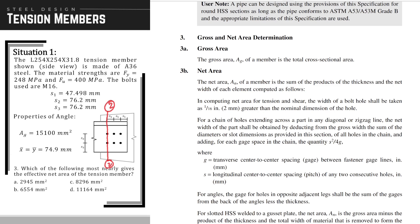In addition, we also have another provision in determining the net area. So as you can read in this part, in computing net area for tension and shear, the width of a bolt hole shall be taken as 1 over 16 inch or 2 millimeters greater than the nominal dimension of the hole. So meaning aside from looking at the standard hole size, we will add another 2 millimeters because we have this provision.